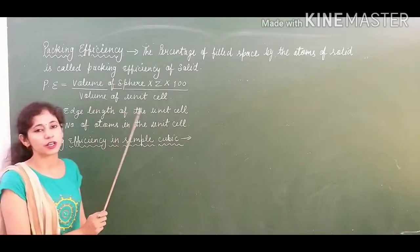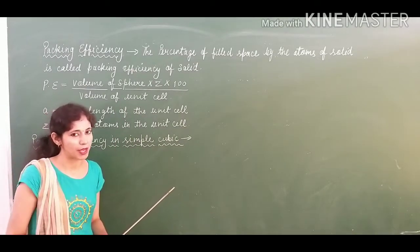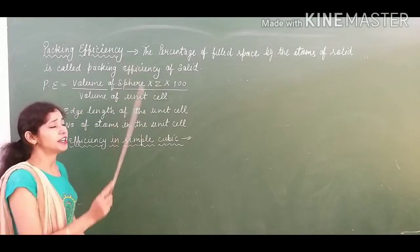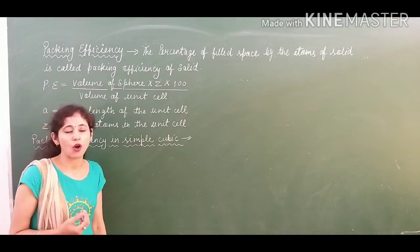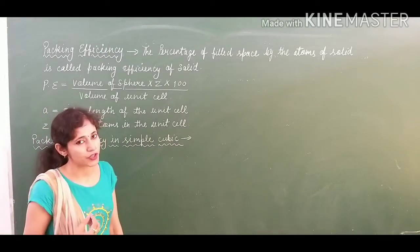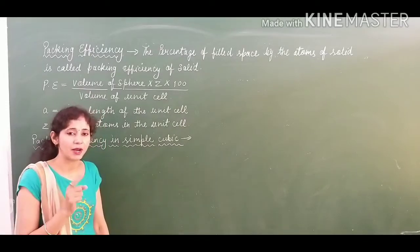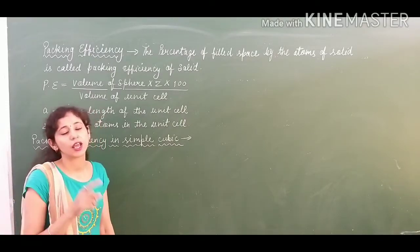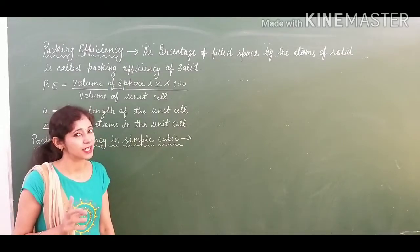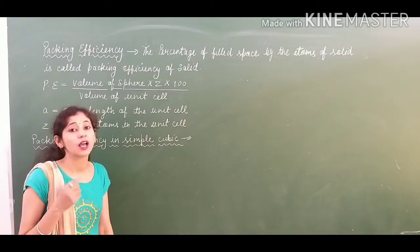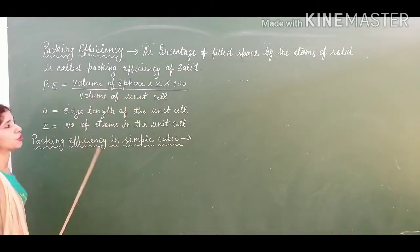The volume of a sphere is (4/3)πr³. Z is the rank of the crystal, which I taught in the previous session. In simple cubic, Z = 1; in FCC, Z = 4; and in BCC, Z = 2. This is divided by the volume of the unit cell.